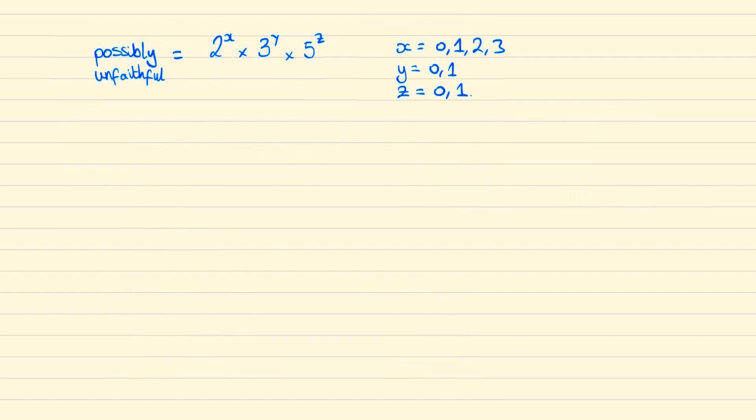So if we substitute each of x, y, and z into the possibly unfaithful numbers then we end up checking the following list.